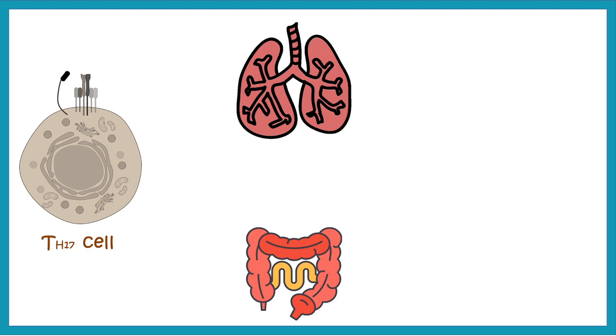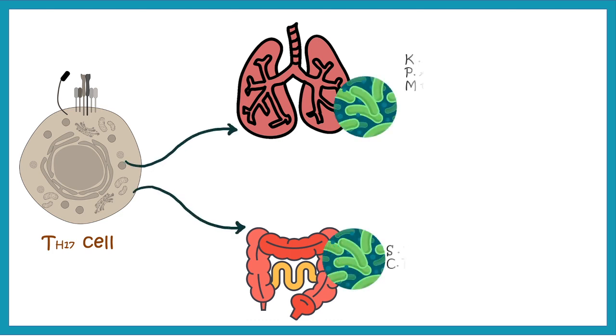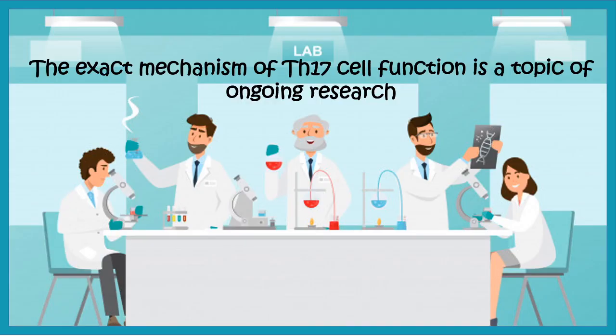TH17 cells found in the lungs and intestine can provide immunity against several bacteria such as Salmonella typhimurium and Pseudomonas aeruginosa. The exact mechanism of TH17 cells is not fully known and remains a subject of ongoing research. In future we hope to learn more about TH17 cells. If you like this video, give it a quick thumbs up, and don't forget to like, share, and subscribe. Thank you!